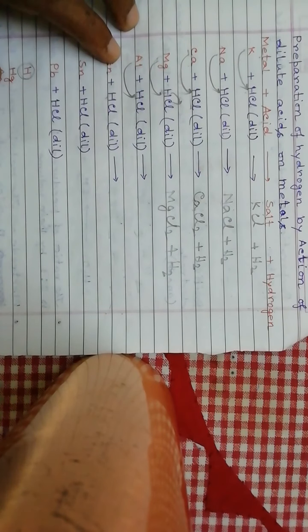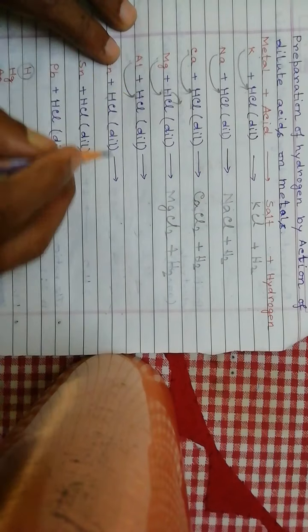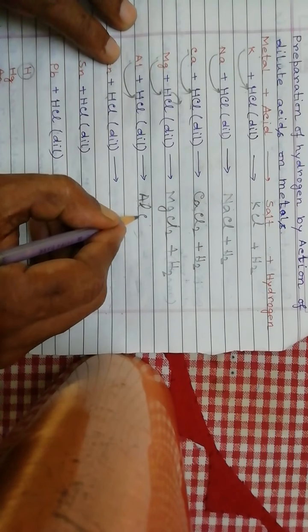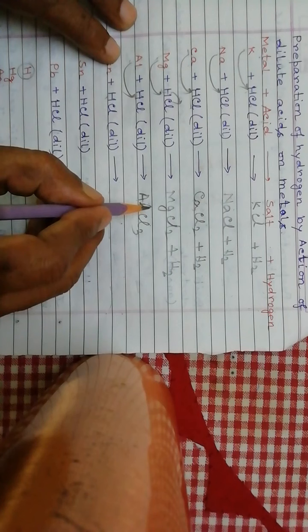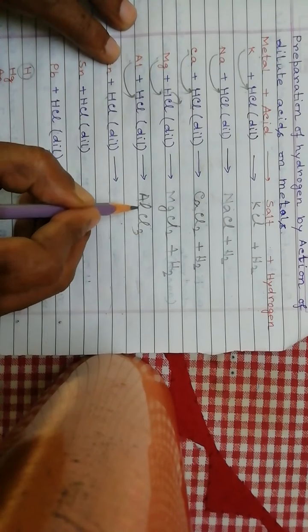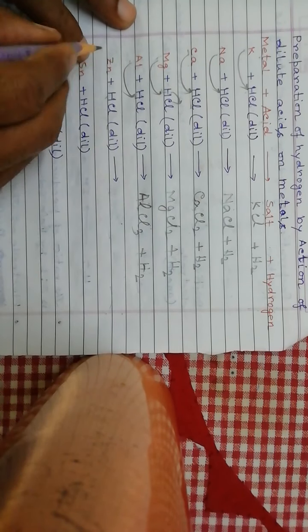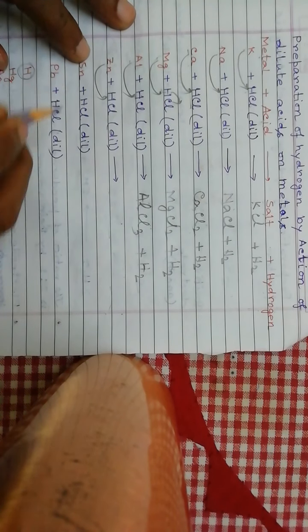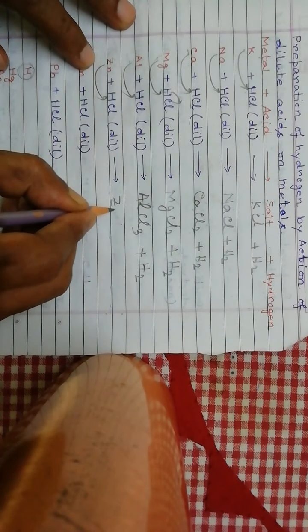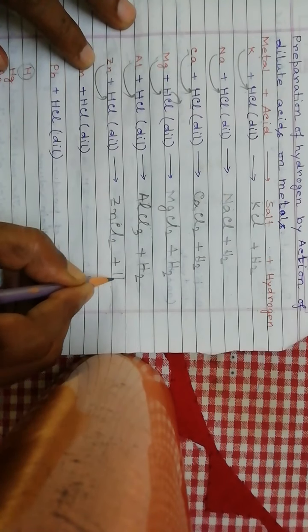When aluminium reacts with hydrochloric acid, aluminium displaces hydrogen and forms aluminium chloride. The valency of aluminium is 3 and chlorine is 1, so the formula is AlCl₃, plus hydrogen. When zinc reacts with HCl, it forms zinc chloride plus hydrogen.